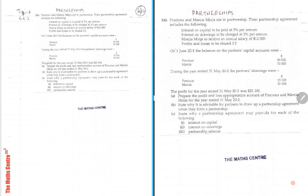Welcome back. This is a continuing series of e-learning videos on IGCSE accounting code 0452. I call this topic F. In the Cambridge syllabus, it is denoted as 6.6.2. My worksheet here is reference 6-12.